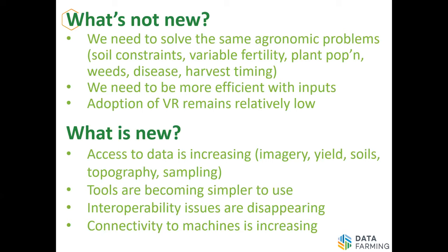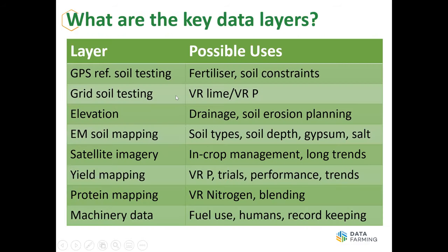The tools are becoming simpler to use, although we had a bit of trouble with some of the new yield mapping software yesterday — but hopefully they're becoming simpler and the interoperability issues are disappearing. Once upon a time two machines could not talk at all. But now we output a shape file which is pretty much used in all machines and screens on the market. On Friday you'll hear from all the manufacturers about how to get data in and out of machines. Every new machine of reasonable size is now connected to the internet, which means we can transfer data easily.